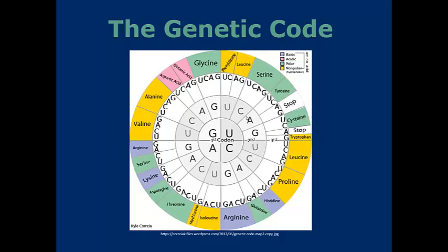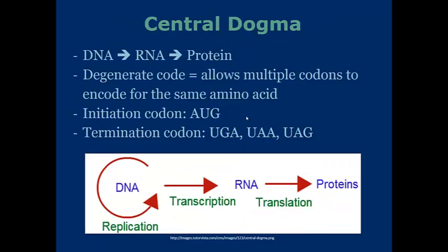Let's go into some basics here. The central dogma of biology states that DNA will flow into RNA, which will go into proteins. Note that there are violations of the central dogma, in particular retroviruses, which go from RNA to DNA first, so hence going against the central dogma. However, most biological systems and biological organisms will operate under the central dogma most of the time.